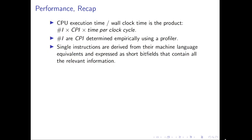With that, we can put it all together. Now we have all the basic ingredients for our definition of performance, which is proportional to the CPU execution time — the wall clock time. The wall clock time is the product of the number of instructions, times the average clocks per instruction (CPI), times the time it takes to perform a single clock cycle. Both the number of instructions and CPI are determined empirically using a profiler that performs sampling based on a particular program run, based on the program's instructions and on the input data. Single instructions are derived from their machine language equivalents and expressed as short bit fields containing all relevant information.